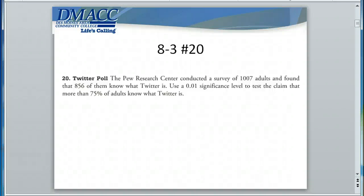Here's an exercise where we can practice performing hypothesis testing on a proportion. In section 8.2, problem number 20, we have a Pew Research Center poll that surveyed 1,007 adults and found that 856 of them know what Twitter is. We're asked to use a 1% significance level to test the claim that more than 75% of adults know what Twitter is.